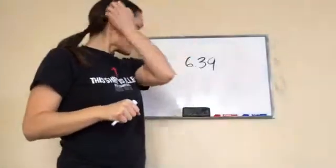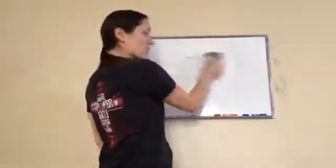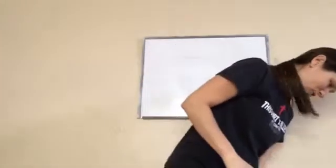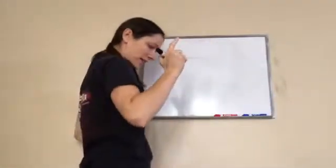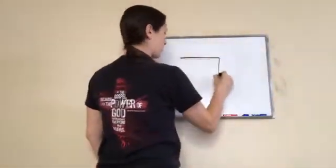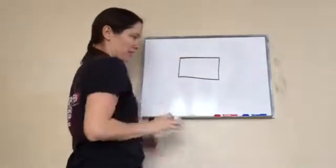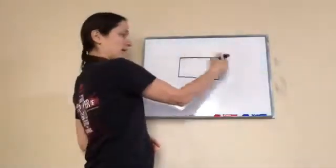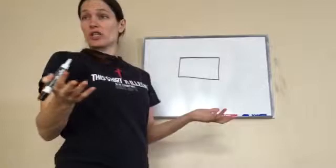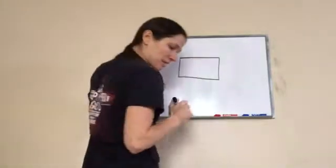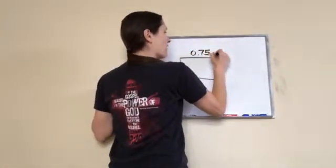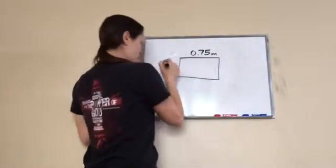Okay, sixth grade lesson 39. This is on multiplying decimal numbers. Let's start with an example. Say you're finding the area—we talked about how we do length times width. We've just done whole numbers up to this point, but sometimes you're gonna get like 0.75 meters and 0.5 meters.